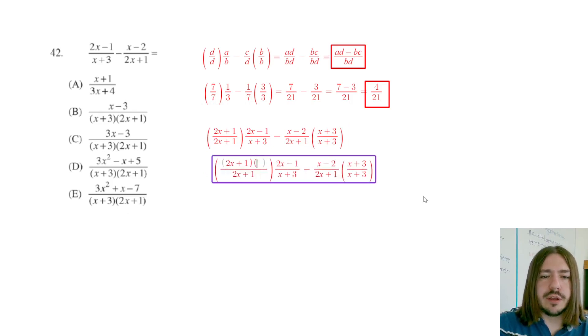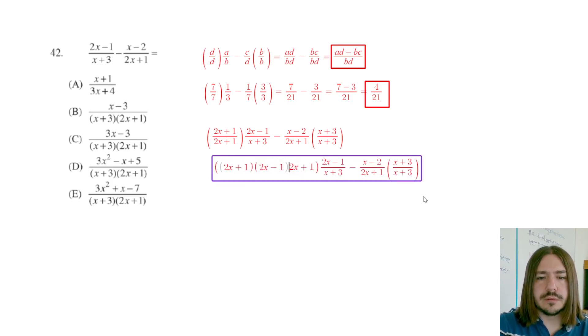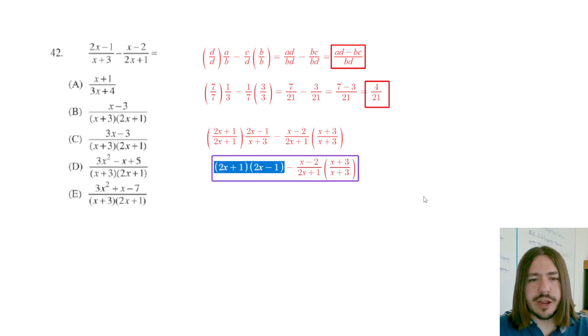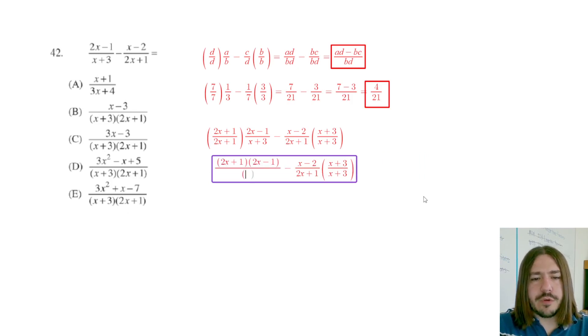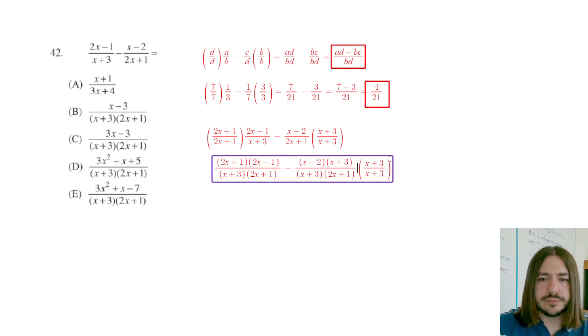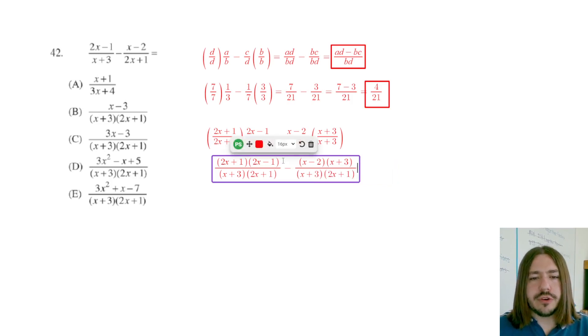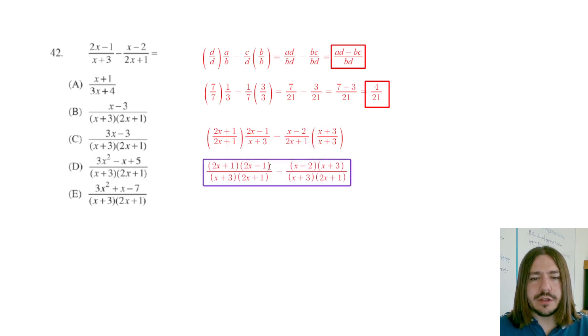So I'm going to multiply these together. Here I get 2x plus one times 2x minus one. I'll just type the whole thing from scratch here. Divided by, and now I'm going to put the x plus three first instead of the 2x plus one. And the reason for that is I'm just looking at my answer choices. They all have the x plus three first. So I'm just going to try to model, always got an eye on where I'm trying to go here. So I'm going to put it like that. And then for my second fraction, I've got x minus two times x plus three over x plus three times 2x plus one.